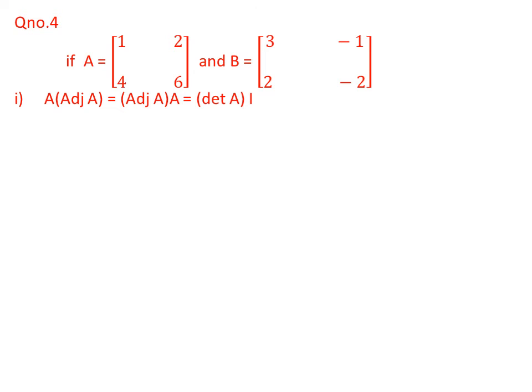Question number 4: two matrices are given — matrix A with elements 1, 2, 4, 6 and matrix B with elements 3, 1, 2, 2. We use matrix A to prove the condition: A × adjoint(A) = adjoint(A) × A = det(A) × Identity matrix.